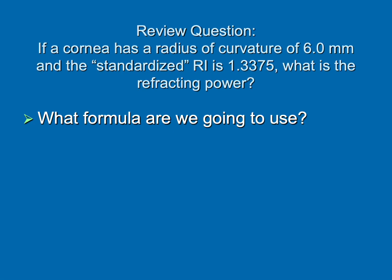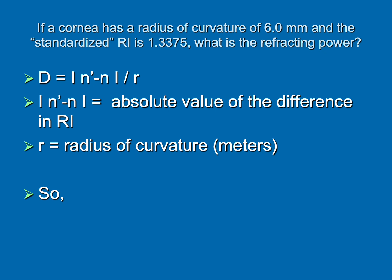The red ray goes parallel, goes through F, blue ray goes directly through F, comes out parallel, and then the gold ray goes right through the center of curvature. That will give me the answer without any more thought than that. So just for fun, let's bring back a question from lesson eight, our first Fun with Lenses talk. If a cornea has a radius of curvature of six millimeters, and the standardized refractive index is 1.3375, what's the refracting power? So do you remember what formula we use for refracting power?